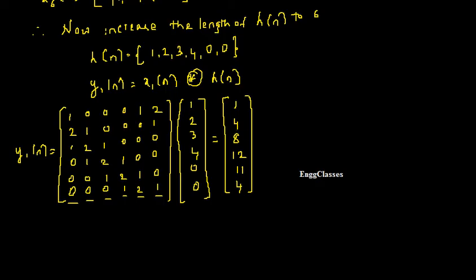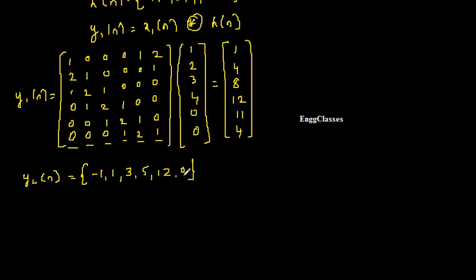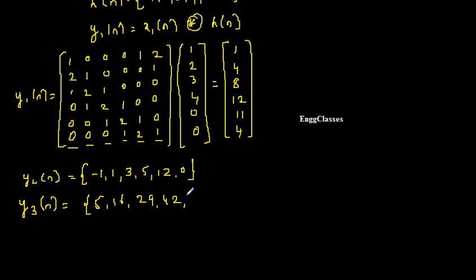Similarly, I calculate y2[n] and y3[n]. y2[n] = x2[n] circularly convolved with h[n], giving: −1, 1, 3, 5, 12, 0. You can verify your answers match. y3[n] = x3[n] circularly convolved with h[n], giving: 5, 16, 29, 42, 30, 8.